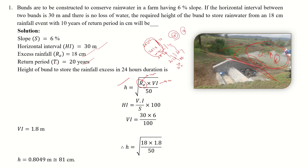Return period is a concept typically covered in meteorology. Since horizontal interval is given, we find the vertical interval using the slope formula, then substitute rainfall excess and vertical interval into the formula to get the height of the bund. The result is 81 centimeters, meaning the depth of water stored behind the bund is 81 centimeters.